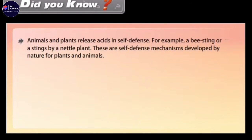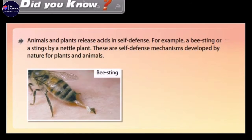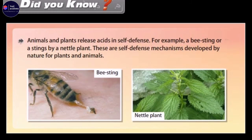Animals and plants release acids in self-defense, for example, a bee sting or stings by a nettle plant. These are self-defense mechanisms developed by nature for plants and animals.